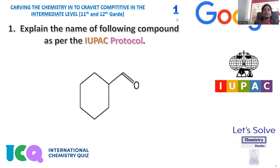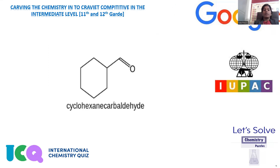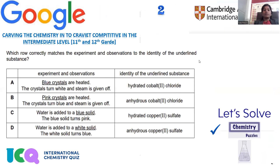So for compound question number one, the IUPAC name is cyclohexane carbaldehyde. Move on to question number two.